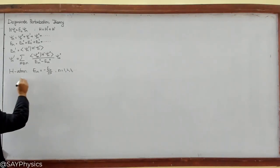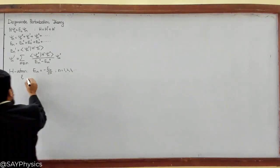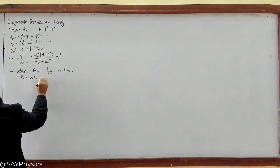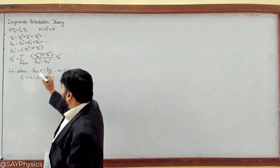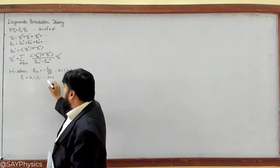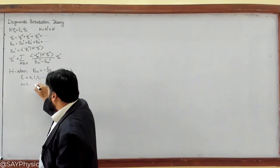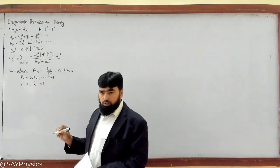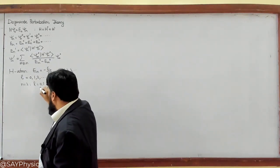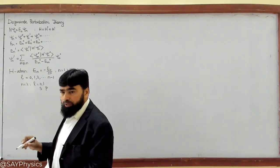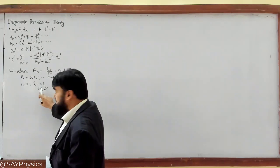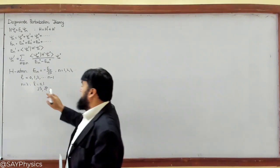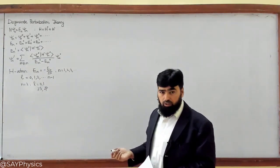For each N we also have l, the orbital quantum number, which starts from 0, 1, 2 up to a maximum of N minus 1. When N equals 1, we have l equals 0, which is the S orbit. When N equals 2, l can take values 0 and 1. The l equals 0 value is the S orbit and the l equals 1 value is the P orbit. So there are two orbitals: 2S and 2P, inside the N equals 2 orbit, and these two orbits share the same energy. So we call them degenerate orbits or degenerate levels.